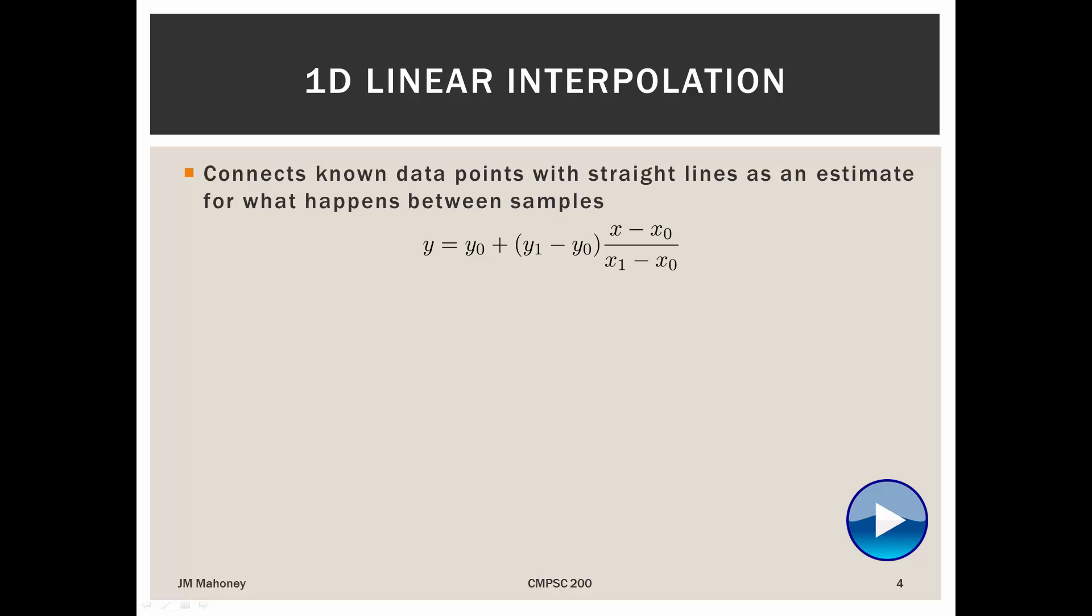So what we have to do is first say, okay, we want to know at 1.7 minutes what was happening. We have to find the measured point to the left of that, closest to the left of it, which in our example would be one minute, and the measured point closest to the right of it, which in our example would be two minutes.